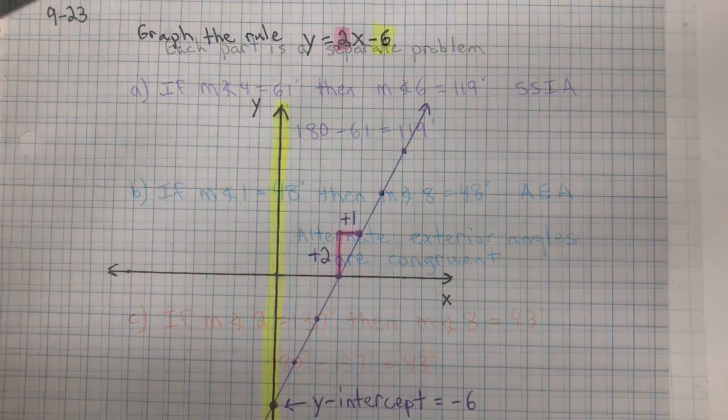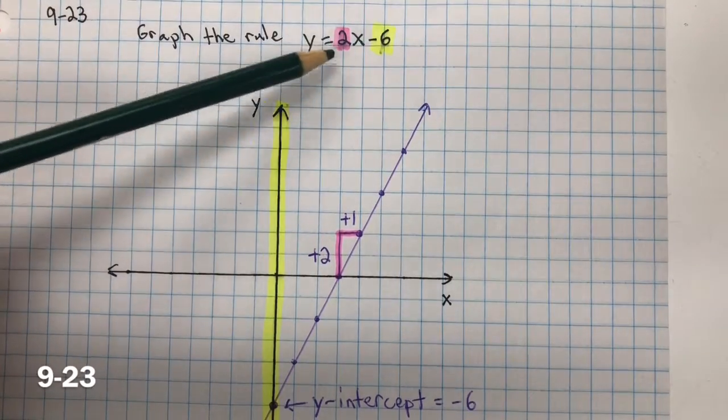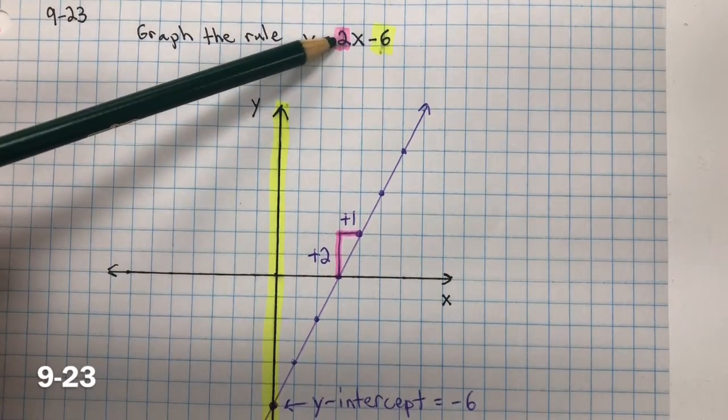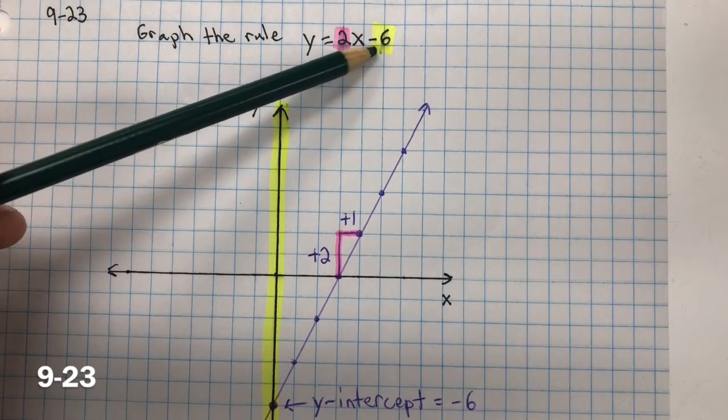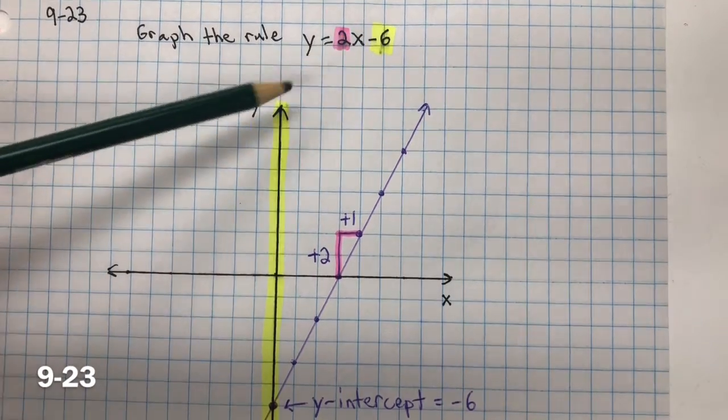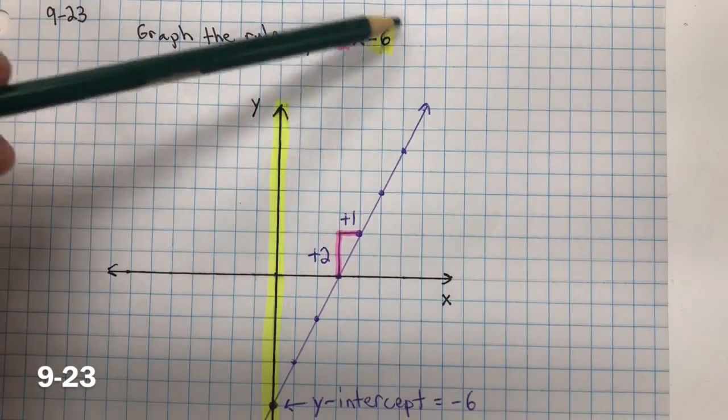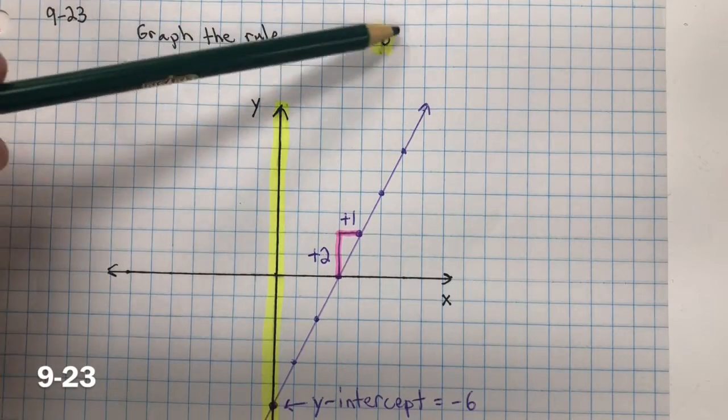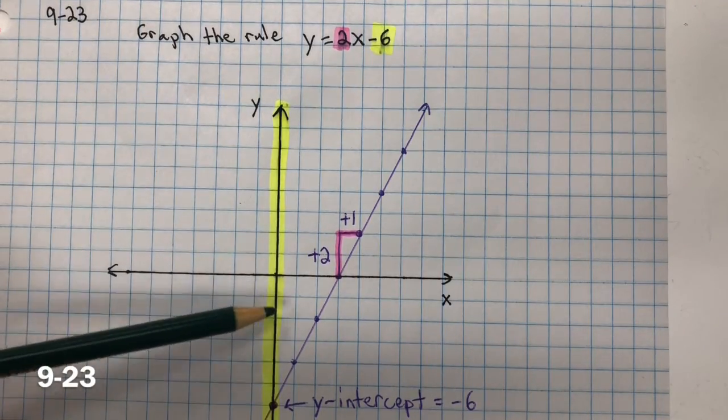For 9-23, we need to graph the rule y equals 2x minus 6. Remember, this is the rate of change, or the slope. This is the y-intercept, or initial value, what you're starting with. So I highlighted the y-axis, and I did that because that is where the y-intercept will be located.